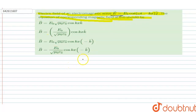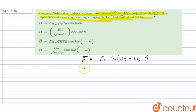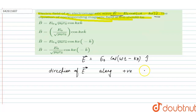Firstly, the given electric field is E = E0 cos(ωt − kx), and the direction of the electric field is positive ĵ vector. That means the direction of the electric field is along the positive y direction.